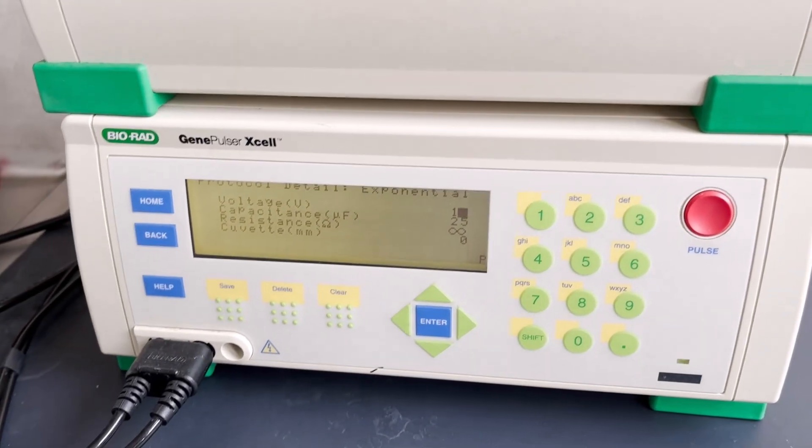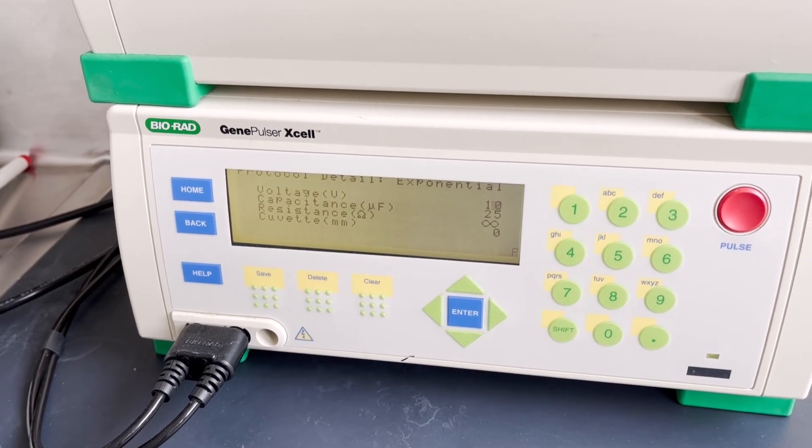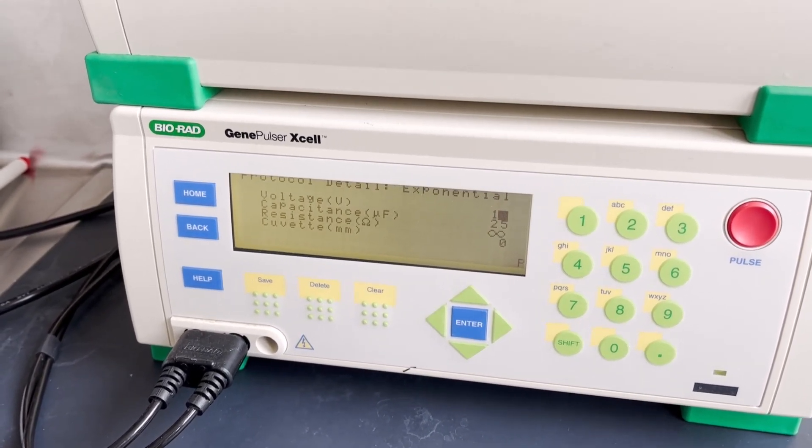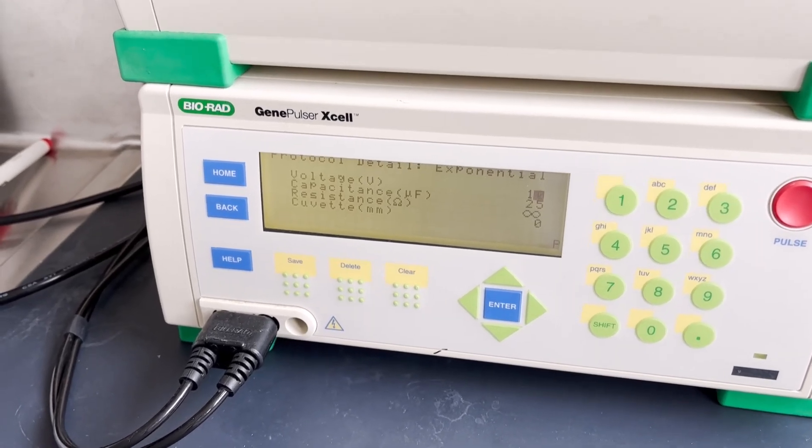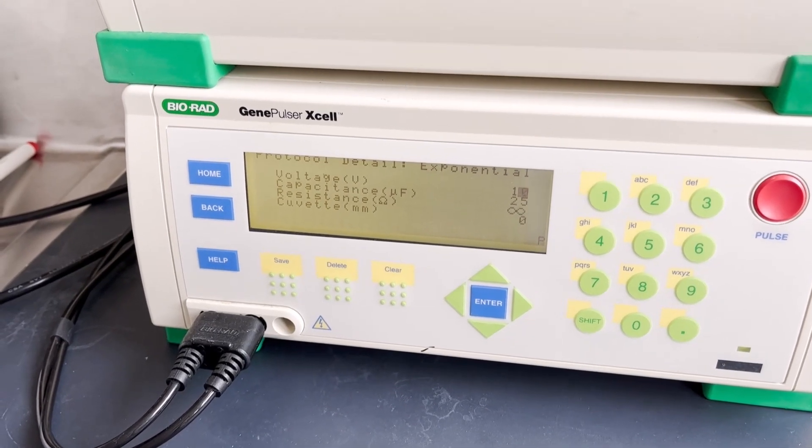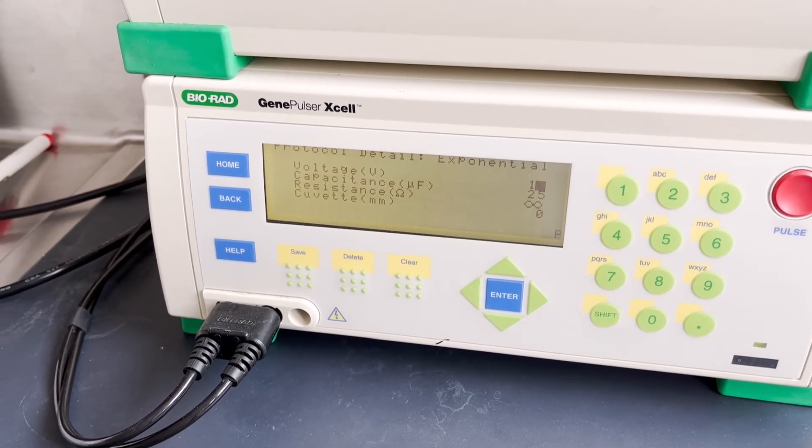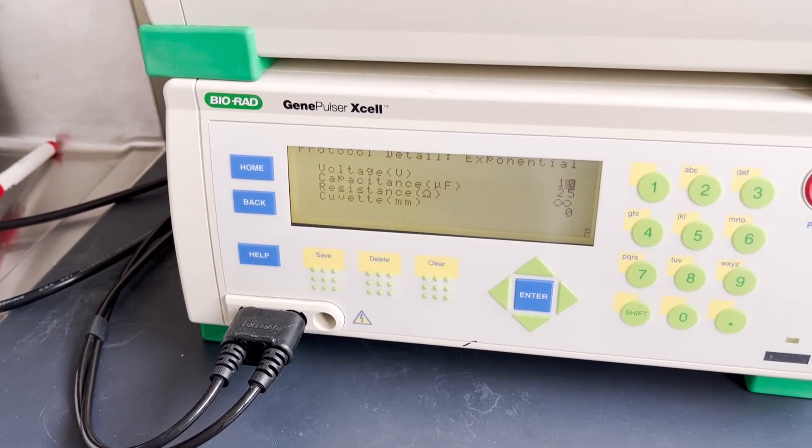Once you've pulsed it will give you information about the time constant and the voltage. You'll want to note those because as you do subsequent experiments, those numbers should stay fairly similar if your preps are similar. If you see those numbers changing a lot, that can suggest that things are changing between your experiments, or for example if you made your buffer again, that it wasn't made exactly the same as the first time.